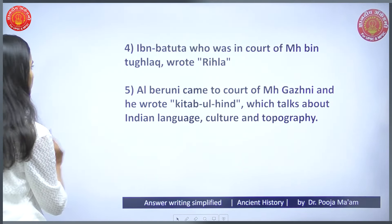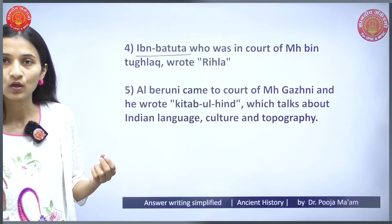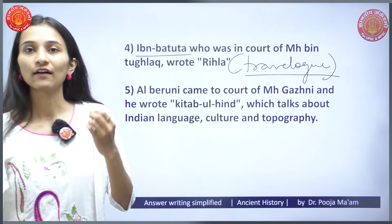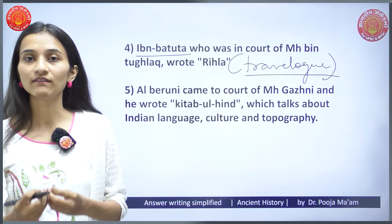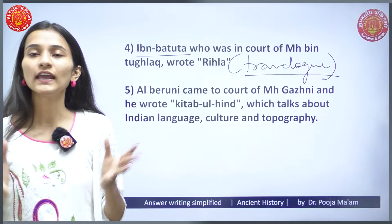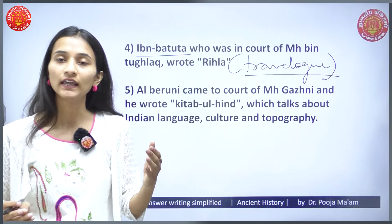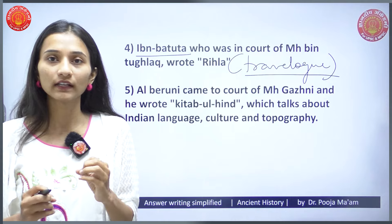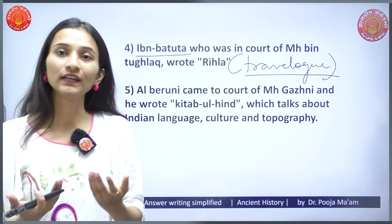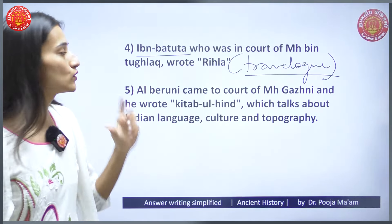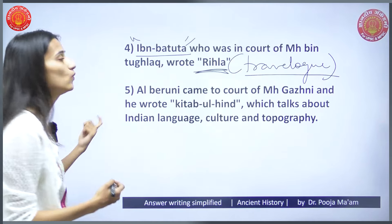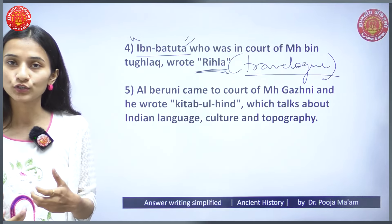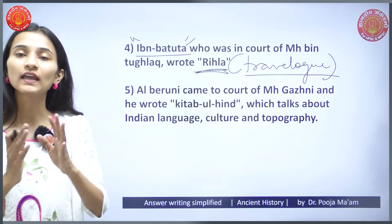Ibn Battuta, who was in the court of Muhammad bin Tughlaq, wrote the Rihla, which was basically a travel log. A travel log is a book in which a person who is traveling through a new province records their observations about that culture, the local customs and traditions, and the way of life. Rihla reflects the defense mechanisms, military-related matters, and cultural boundaries of that era.